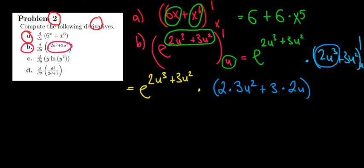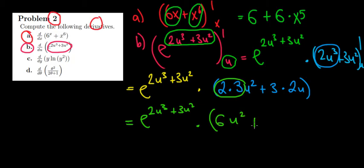Now let's see how we can write it in a more simple way. We will keep writing our e, so e to the power 2u cubed plus 3u squared, multiplied with, what do we have here? 2 times 3, that's just going to be 6u squared, plus 3 times 2, that's 6u. So plus 6u.